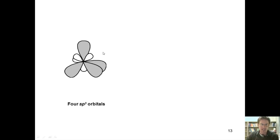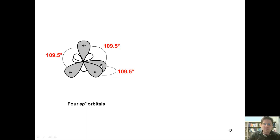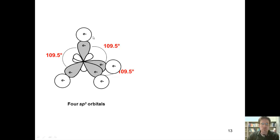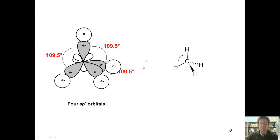Carbon now places each of these new sp³ orbitals together in a three-dimensional form, and the bond angle between them is 109.5 degrees. Carbon places its four valence electrons — one into each of these four sp³ orbitals. Now each of the four hydrogen atoms can come right in, 109.5 degrees apart, overlap with these four sp³ orbitals, and form a nice beautiful molecule of methane.